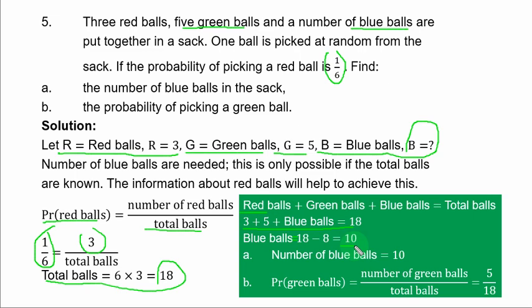Then B, probability that green balls were picked is equal to number of green balls over total balls, and that is 5 over 18. That is probability of picking a green ball.